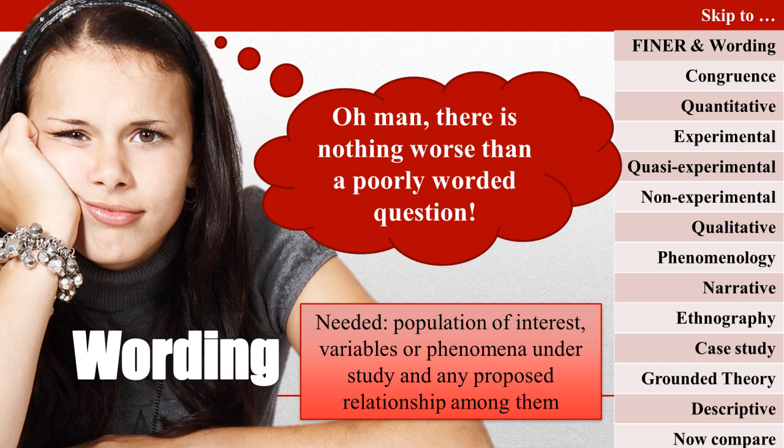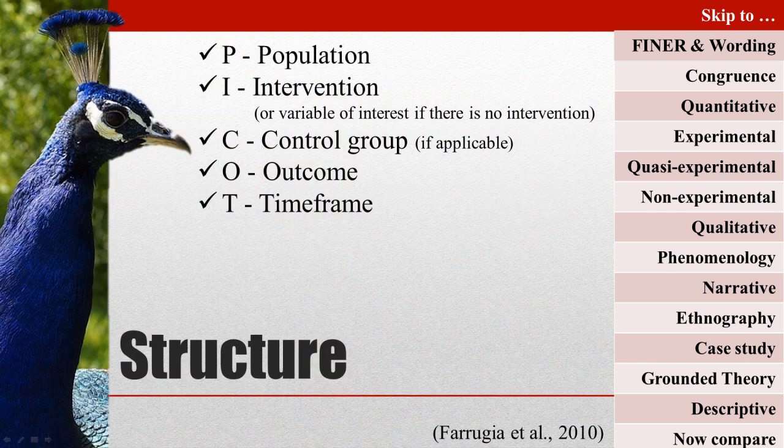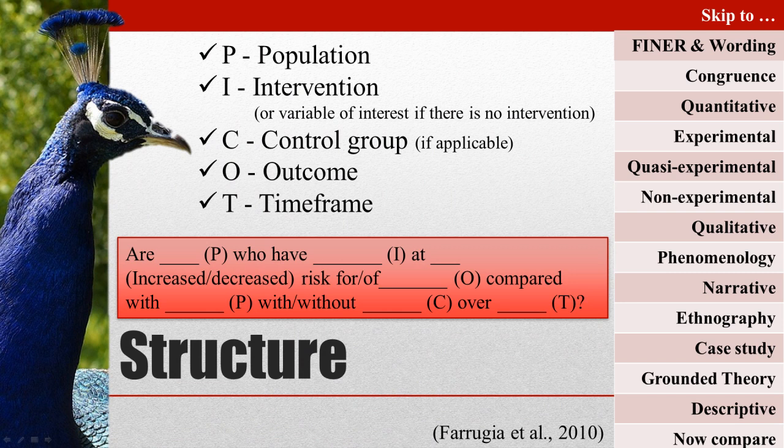In general, quantitative research questions should follow PICOT format. PICOT stands for the population of interest, the intervention being studied, the comparison group, and the outcome of interest, as well as the timing.